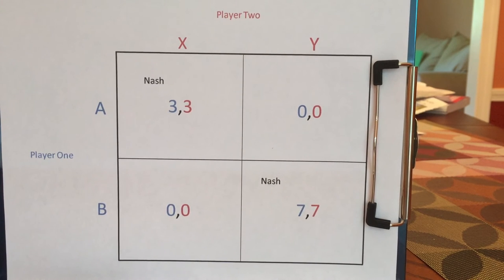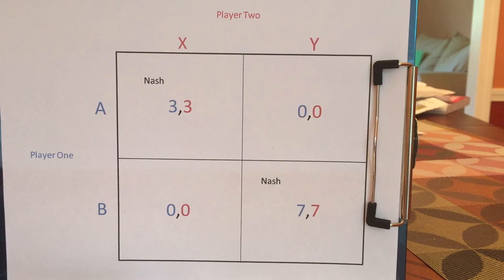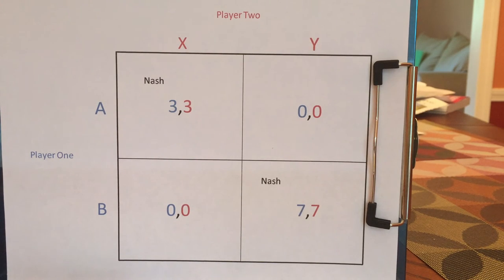Nash Equilibrium is a way of categorizing games. A lot of Nash Equilibria are reasonable outcomes, but not all of them are. So it's not enough to say that can't be a Nash Equilibrium because reasonable people would never end up there — that's not part of the definition of Nash Equilibrium.